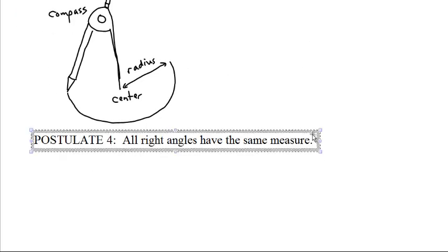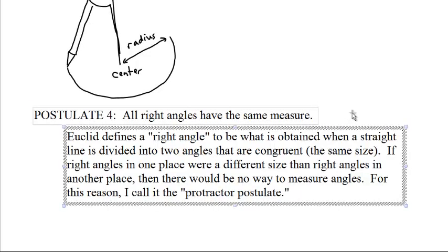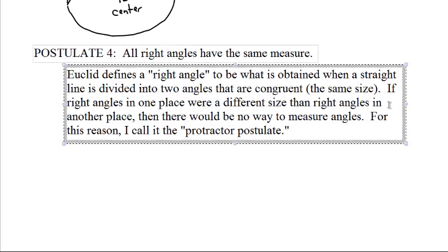Postulate 4: All right angles have the same measure. Euclid defines a right angle to be what you get when a straight line is divided into two angles that are congruent. If right angles in one place were different than right angles in another place, then there would be no way to measure angles. For this reason, I call it the protractor postulate.